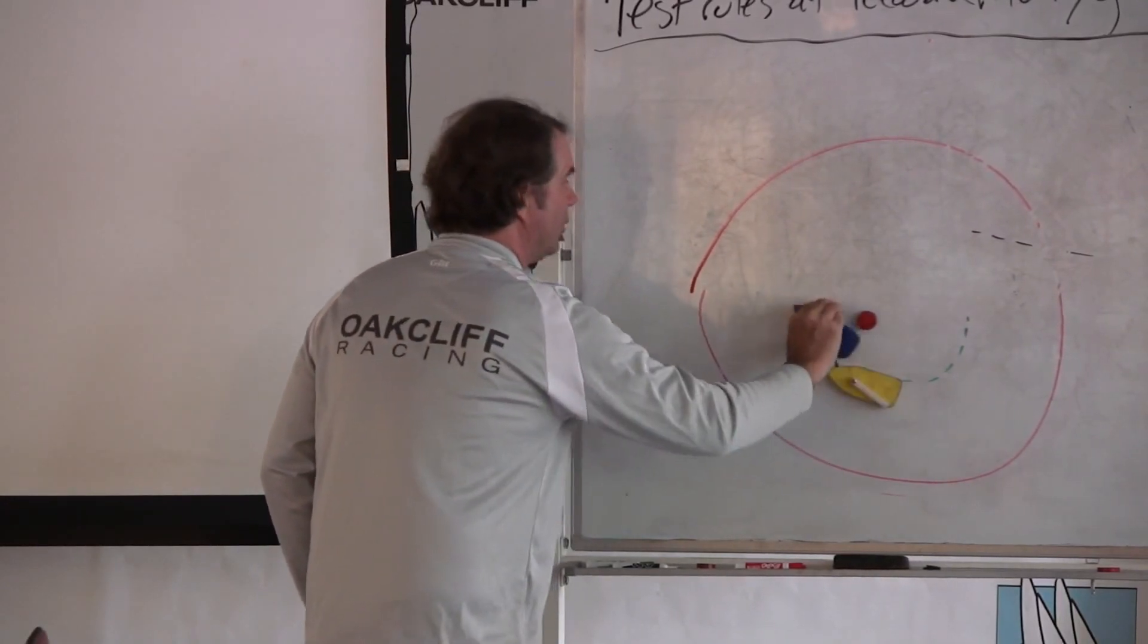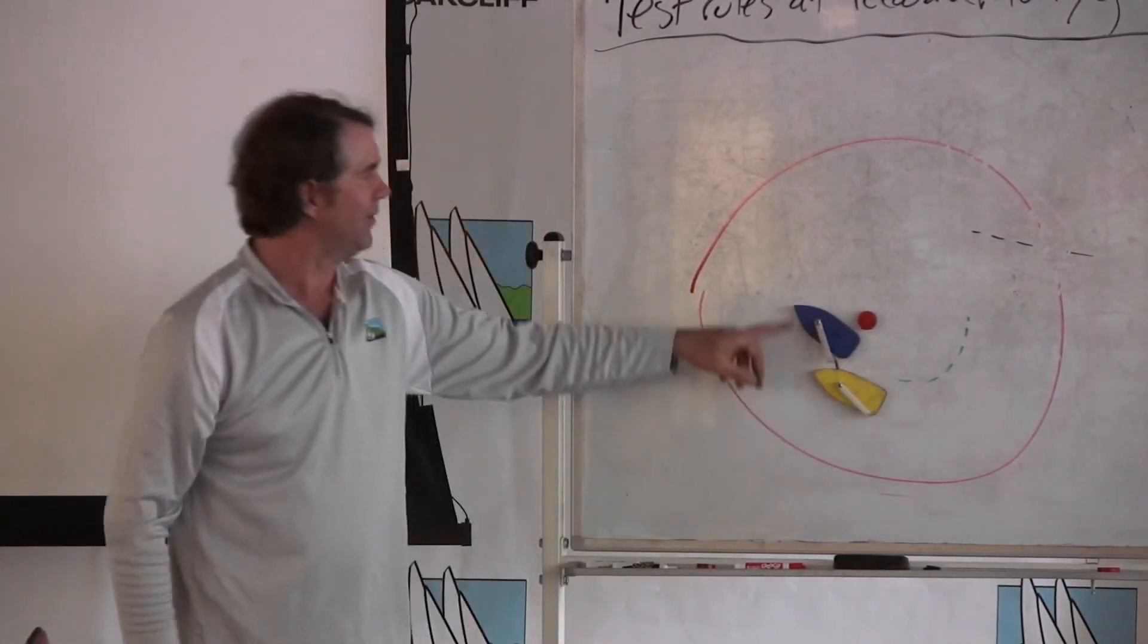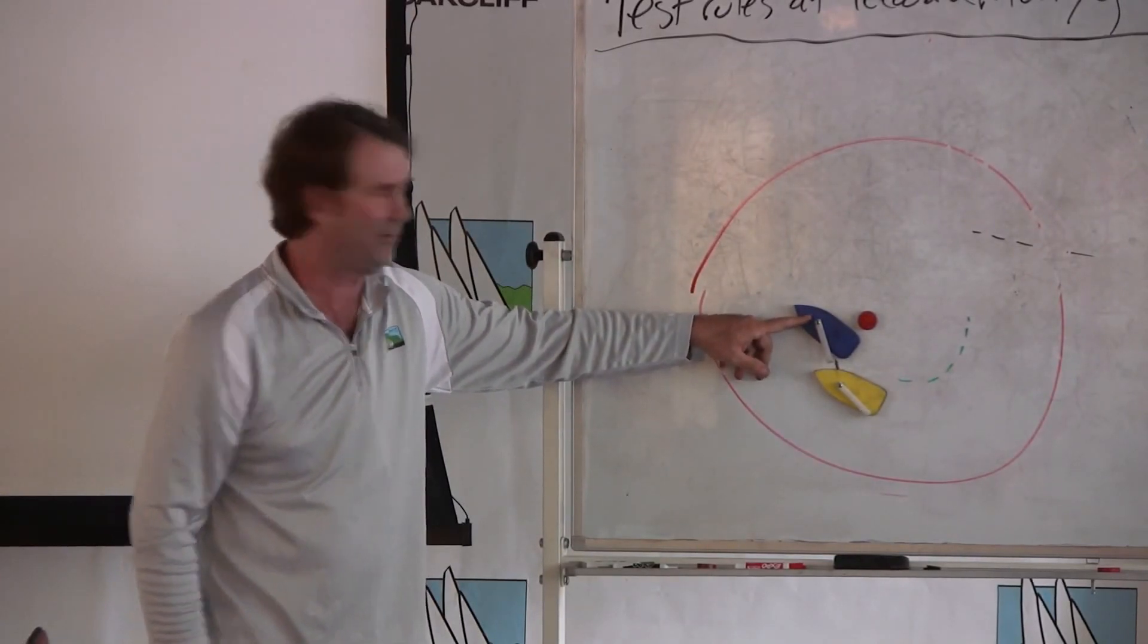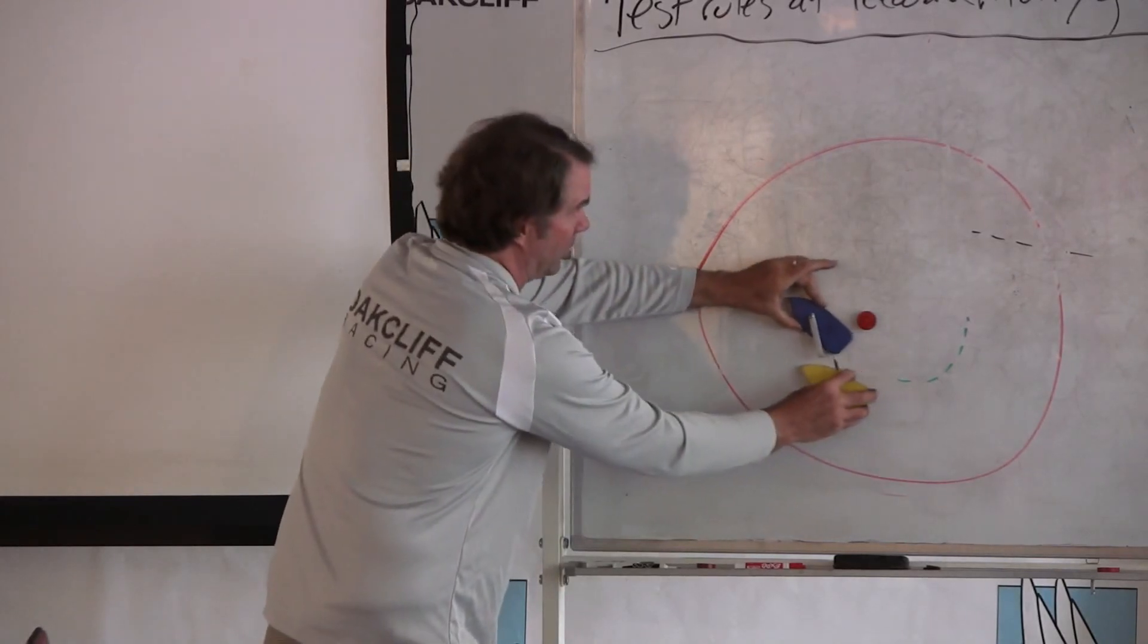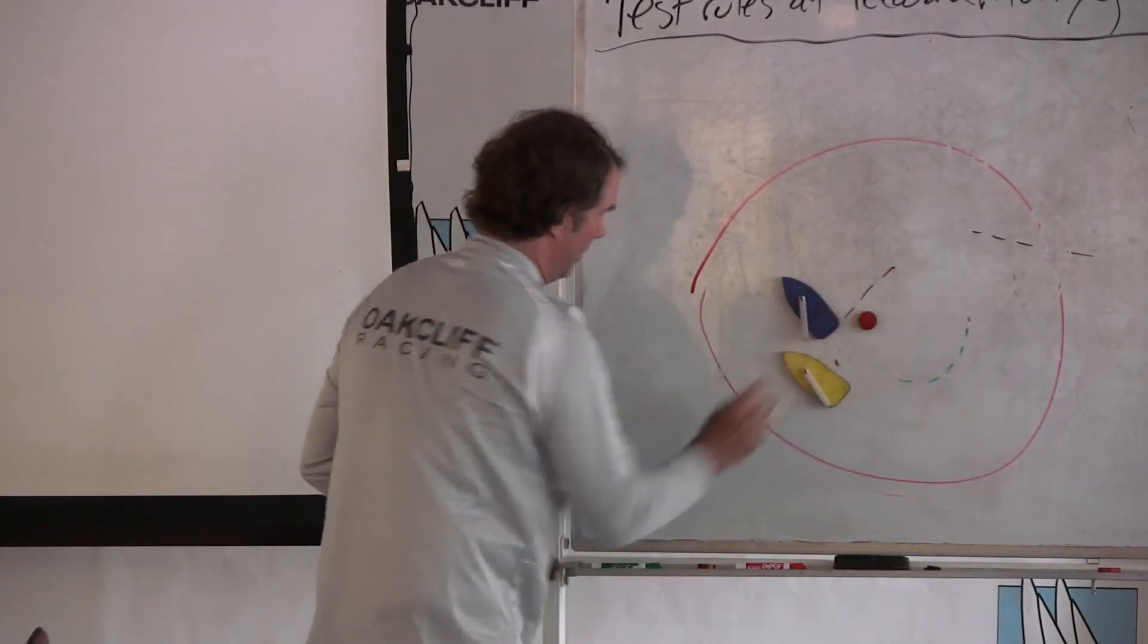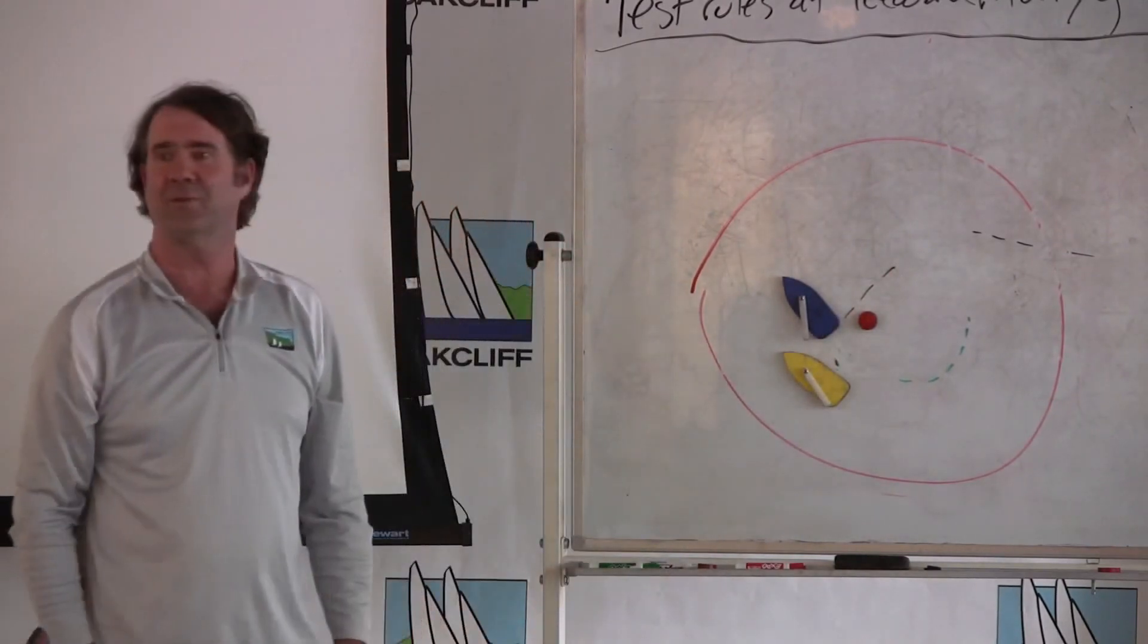Under the test rules, however, yellow has to give blue room to sail her proper course until she's completed her rounding and passing. So yellow has to wait until blue's stern passes the mark before she exercises her right to luff.